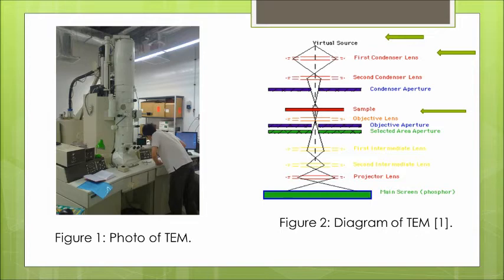Moving further, the intermediate lens controls the mode of imaging and finally, the projector lens is used to provide another magnification of the image before it is projected to the phosphorus screen.